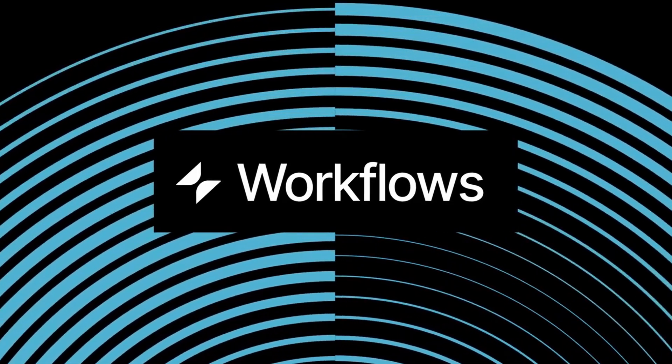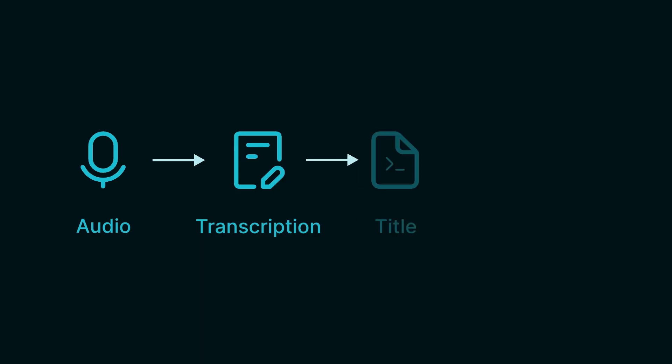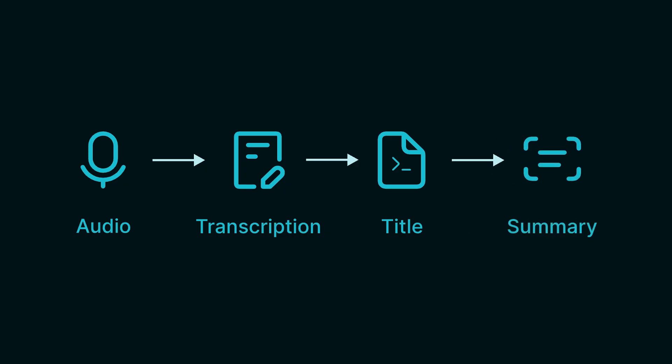The next step is where the actual magic happens. We'll use Glide's new Workflows feature. We're going to use the audio recording file, then process it with AI to get a transcription, use AI again to generate a title based on that transcription, and then use AI one more time to create a summary of our notes — so it's easier to identify what we're talking about in that specific recording. To achieve that, let's create a custom workflow.